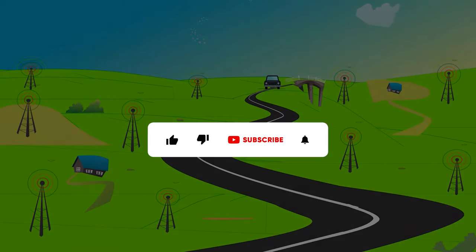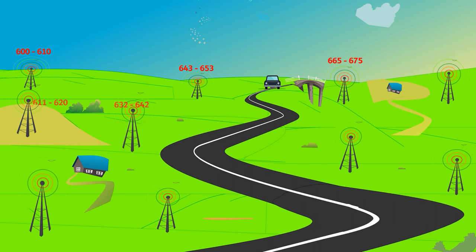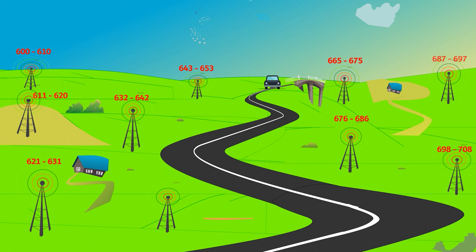When a mobile device, such as a smartphone or tablet, moves from one place to another while communicating with a cell tower, the device automatically connects to the nearest cell tower.